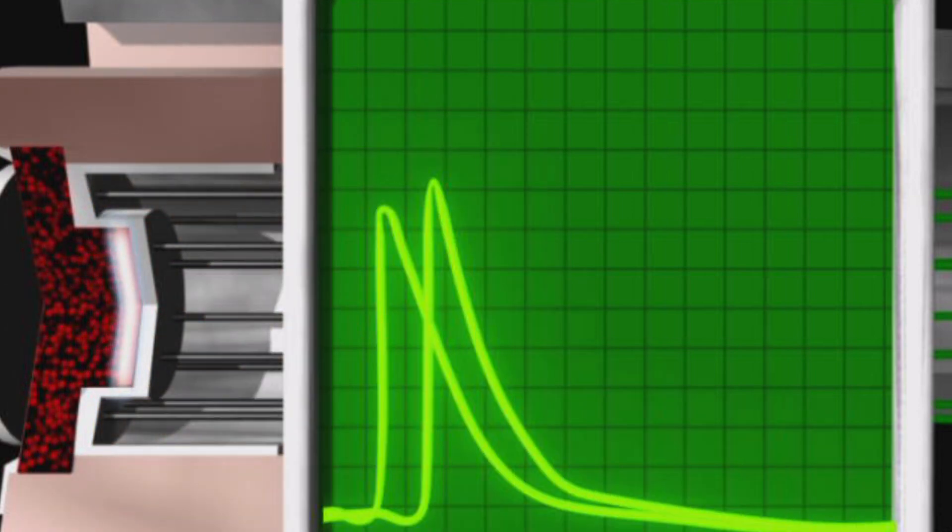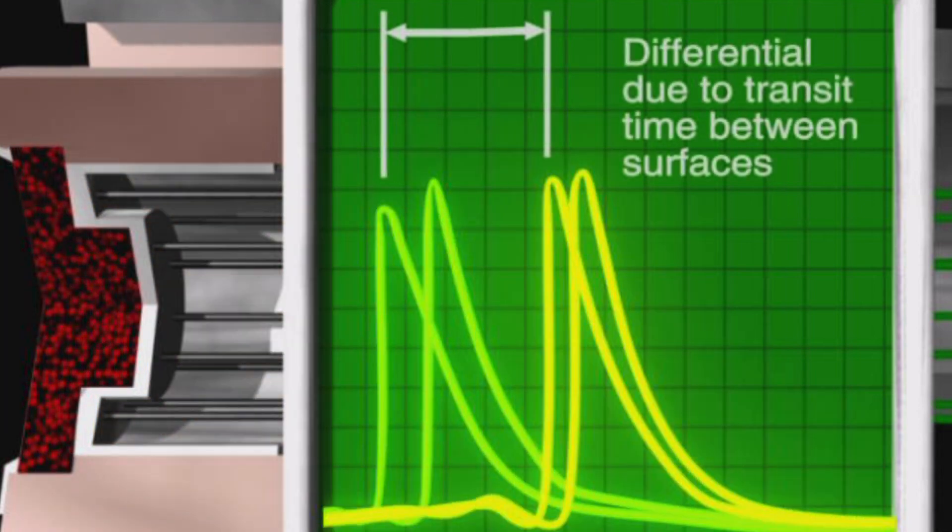Data to support the stockpile stewardship program are collected within a fraction of a microsecond. The arrow shows the difference in shock arrival times between the front and back surfaces. These data are used to determine the equation of state of plutonium.